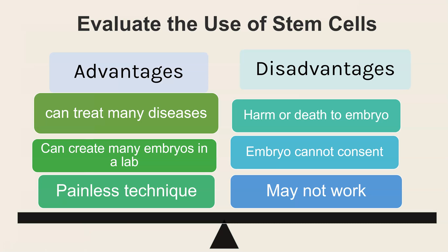There are pros and cons of using embryonic stem cells. Some advantages: you can use them to treat many diseases, you can grow lots of embryos in a lab, and this is a completely painless technique for the embryo. The disadvantages are that, although it doesn't hurt the embryo, it will cause permanent harm or death of that embryo. The embryo can't give consent, and also it might not even work. Stem cells have the property of replicating rapidly, so sometimes even when the stem cells are put into the patient, they can replicate so much that they form a tumour. Embryonic stem cell therapy is not a perfect science, and you need to be aware of the pros and cons.